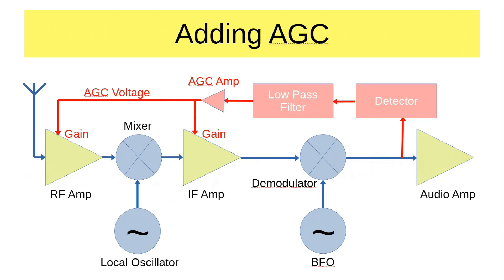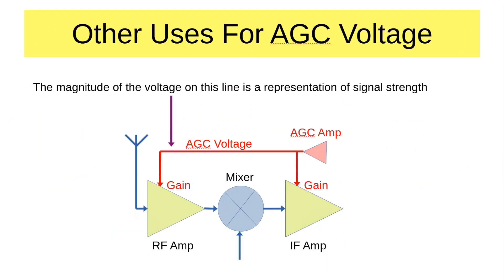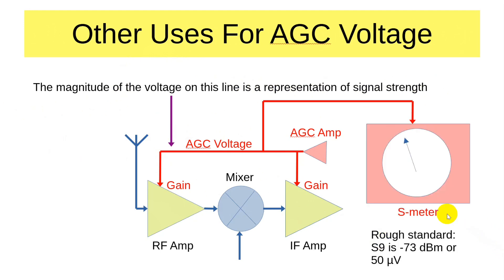There are complexities, but let's focus on this: the AGC signal coming through the detector and low-pass filter goes up and down and is used to vary the gain of the RF and IF amps. The magnitude of the voltage on this line is a representation of signal strength, and it's used to lower the gain of the RF amp and the intermediate frequency amplifiers. What else can we do with it? Since it's a representation of signal strength, we can measure it. That's your S meter — it's actually measuring the AGC voltage. As this voltage magnitude goes up, the S meter goes up.